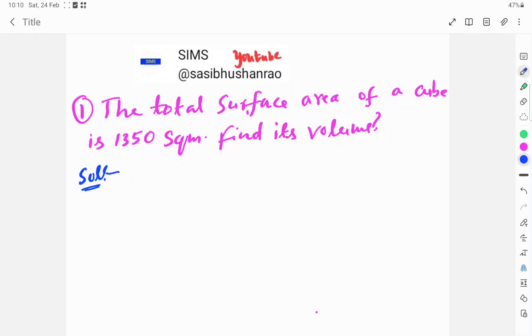Welcome to Sims. The total surface area of a cube is 1350 square meters. Find its volume.